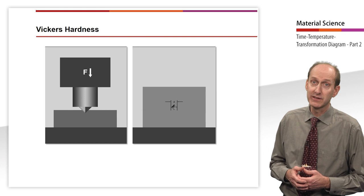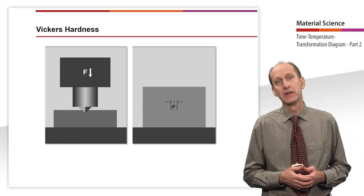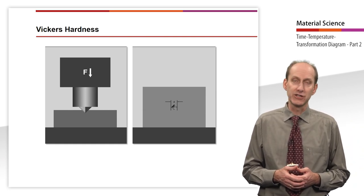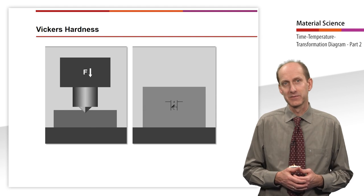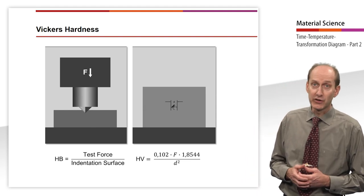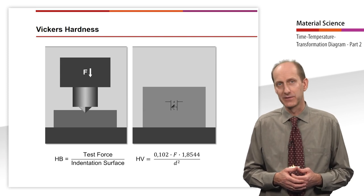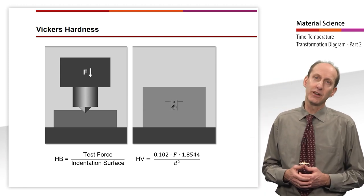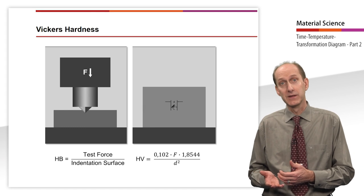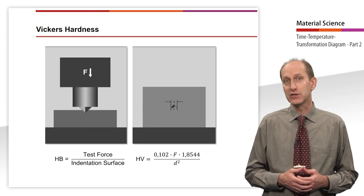As in the Brinell hardness test, the indentation surface is calculated from the indentation diameter d. The test load is varied according to the thickness of the workpiece and the hardness. The ratio of test load to surface results in the Vickers hardness Hv.